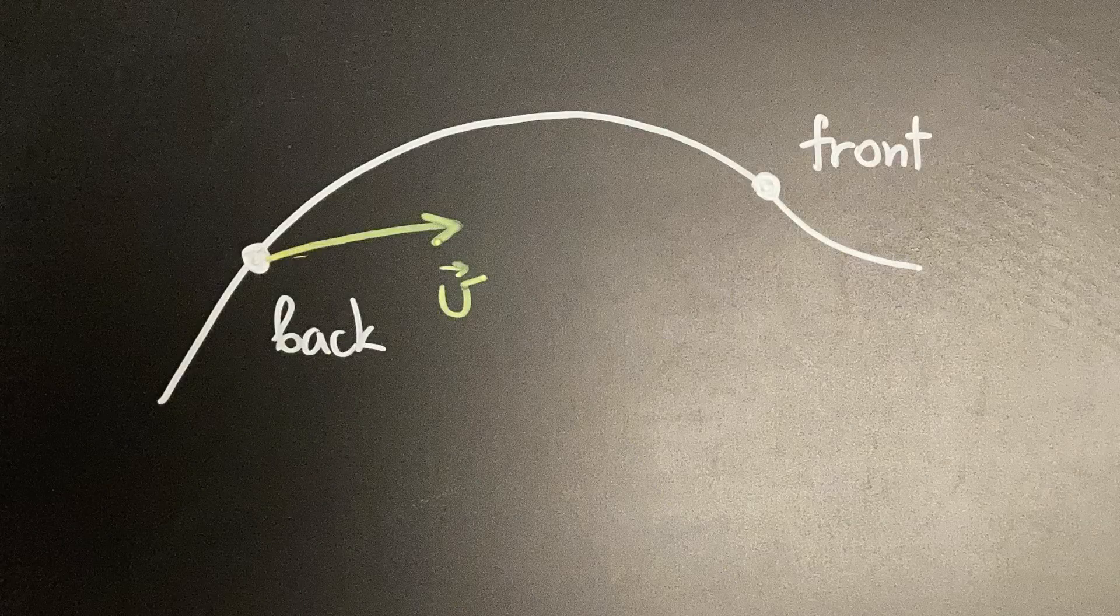More precisely, the position of the front wheel relative to the back wheel determines the direction of the back wheel. Let's name the points of contact of the front and back wheels with the ground F and B respectively.